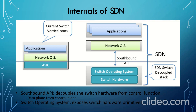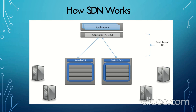The internals of SDN: an SDN consists of applications, a network operating system, as well as the ASIC or hardware. The application is connected with the network operating system, which is then connected with a switch operating system and switch hardware. This is the SDN switch decoupled stack, used by SDN for connecting the hardware with software-defined networking. The southbound API is an API which decouples the switch hardware from the control function, and the switch operating system exposes switch hardware primitives. SDN encompasses several types of technologies including functional separation, network virtualization, and automation through programmability.